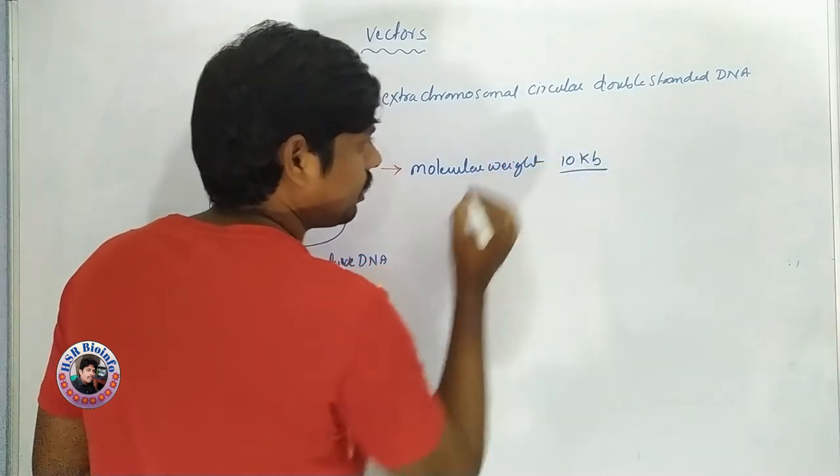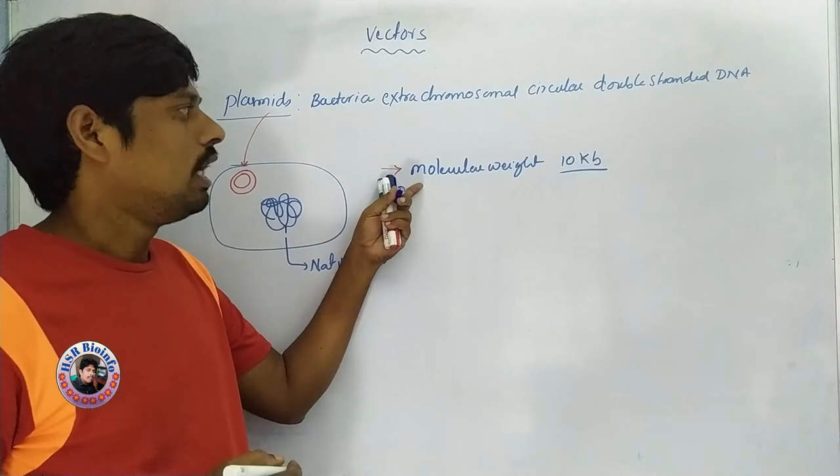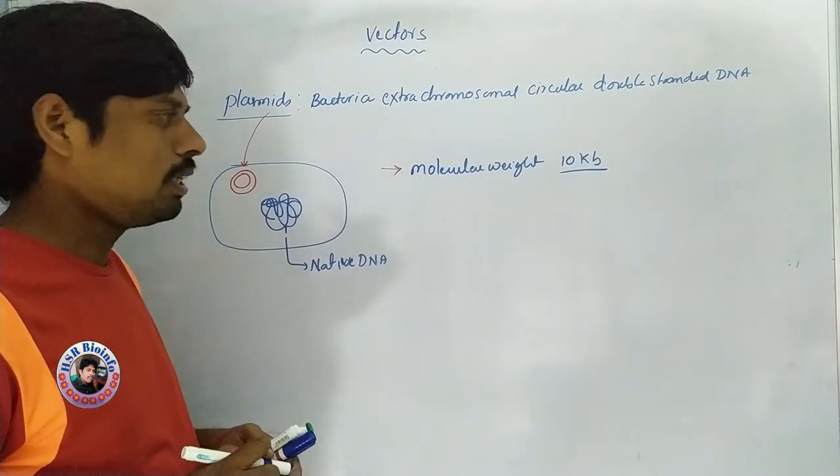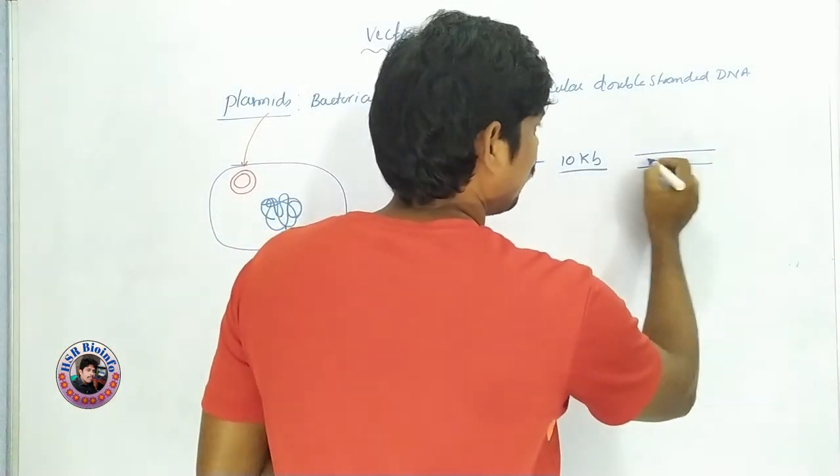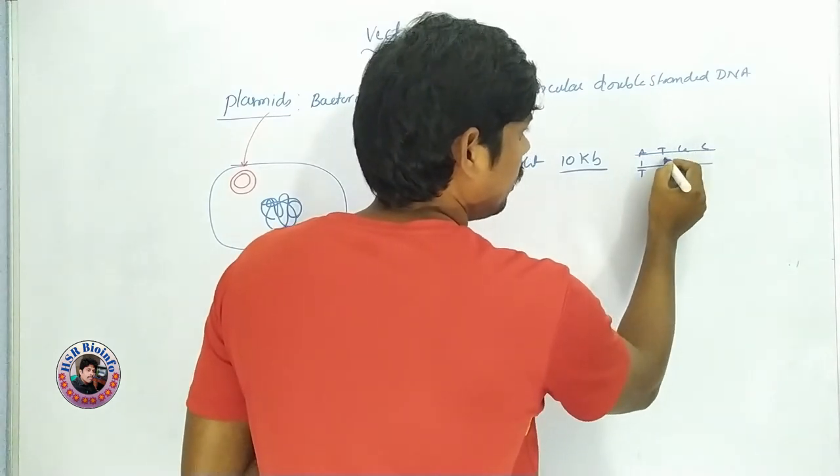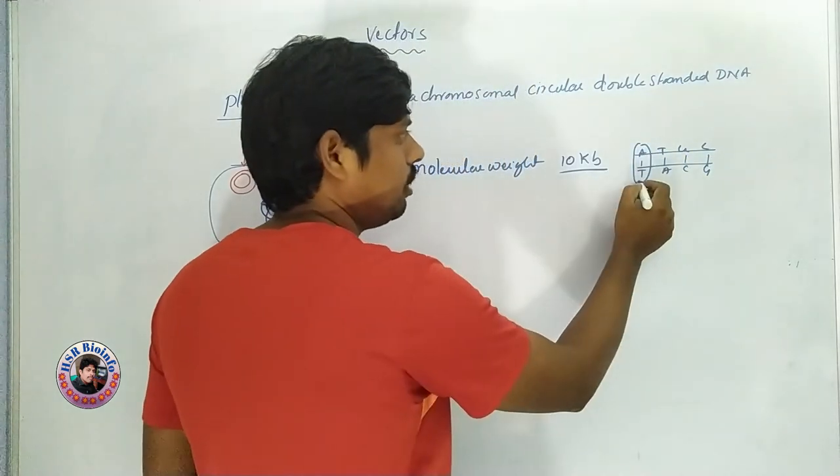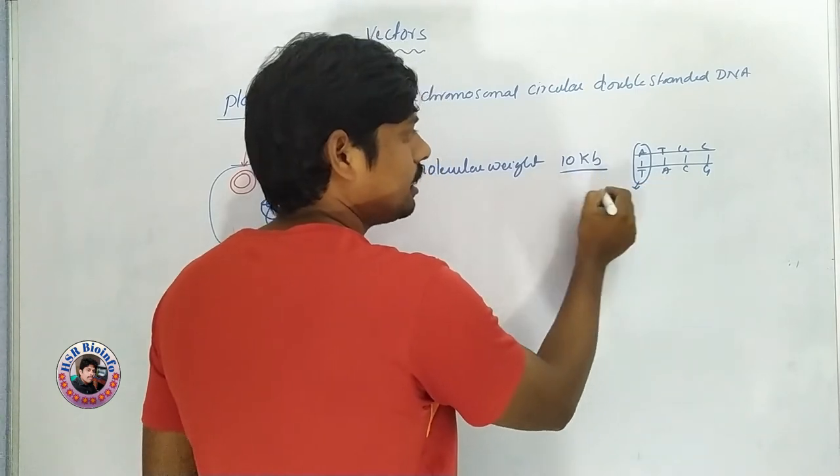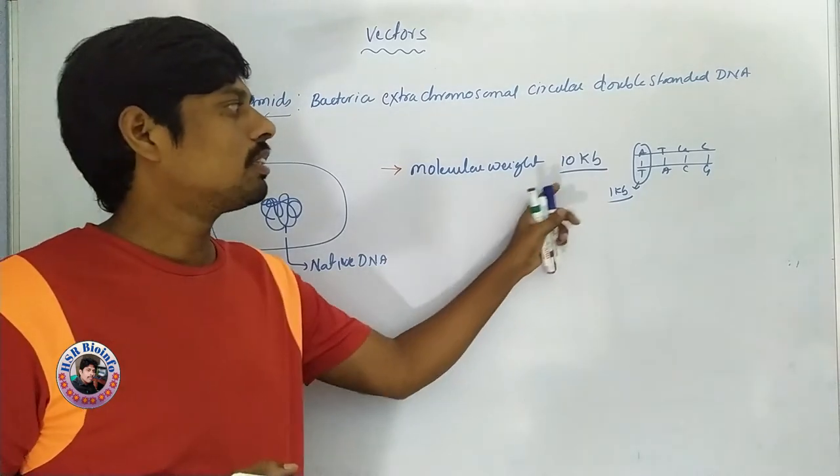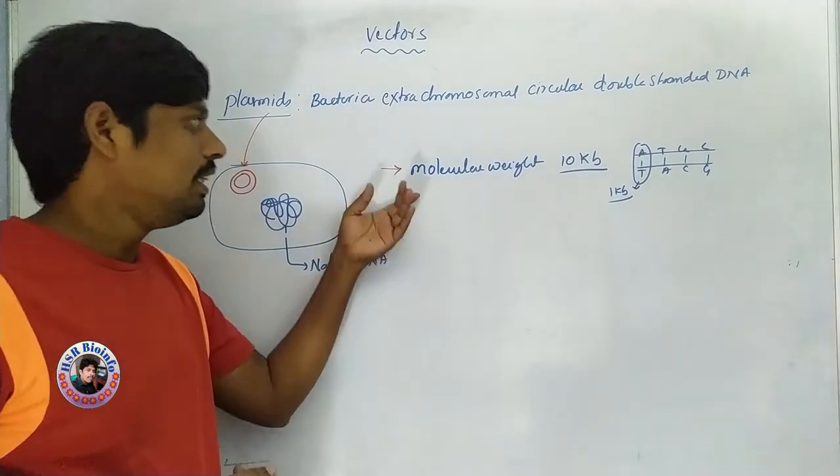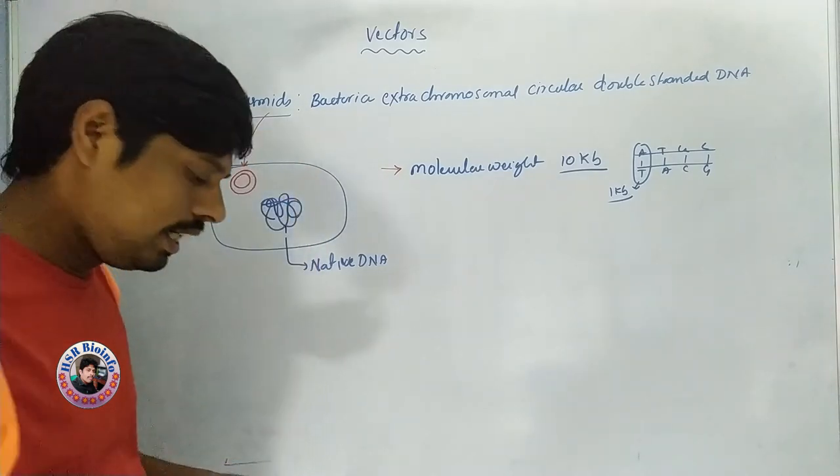The molecular weight is around 10 kilobases, or 10,000 base pairs. Base pairs include adenine, guanine, thymine, and cytosine nucleotides. 1000 base pairs is called 1Kb. The main property is that plasmid DNA is naked DNA.